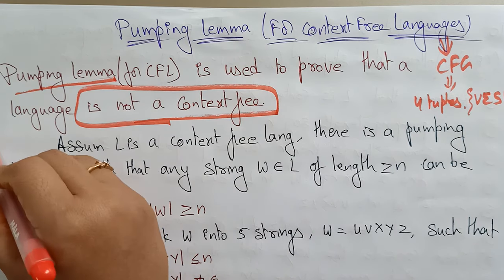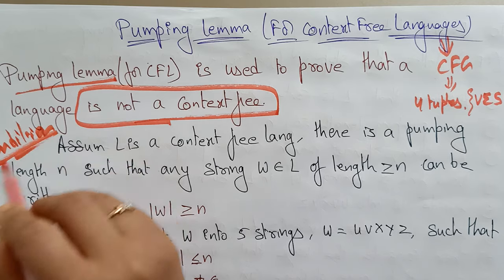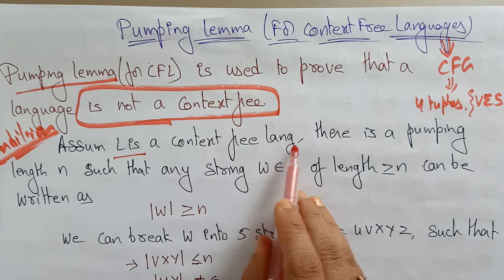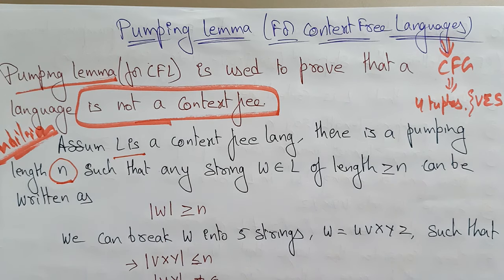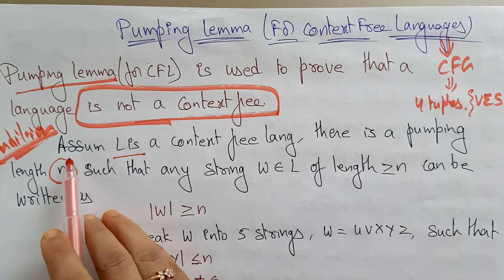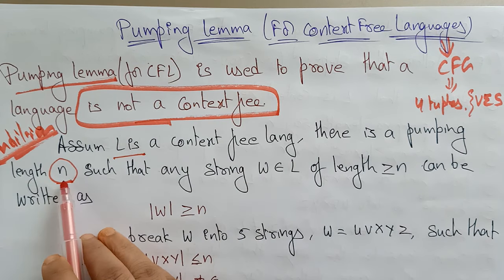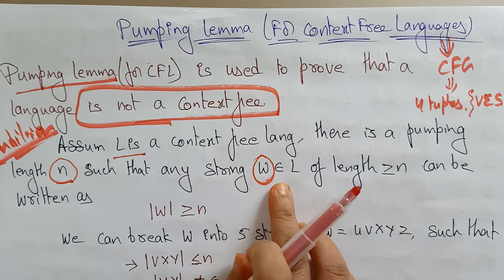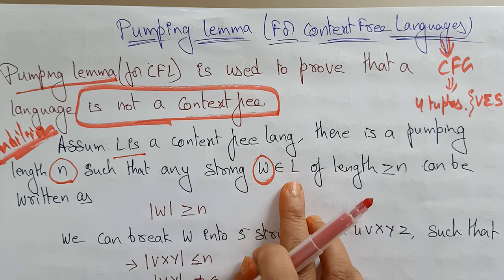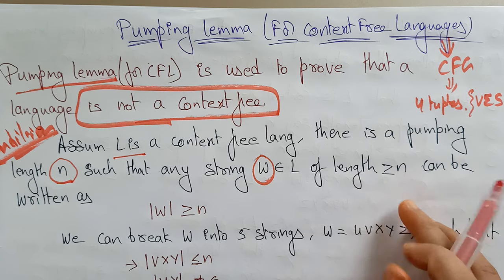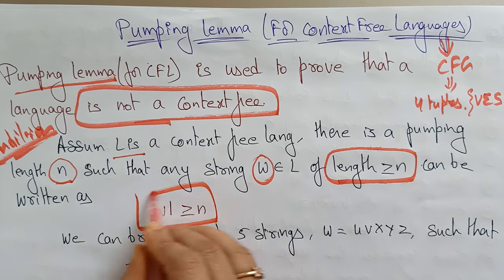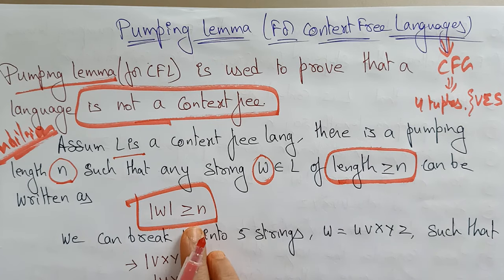Let's look at the theorem and its conditions. Assume L is a context-free language. There exists a pumping length n such that any string w in L with |w| ≥ n can be pumped. That is, the length of the string must be greater than or equal to the pumping length n — this is the first condition.